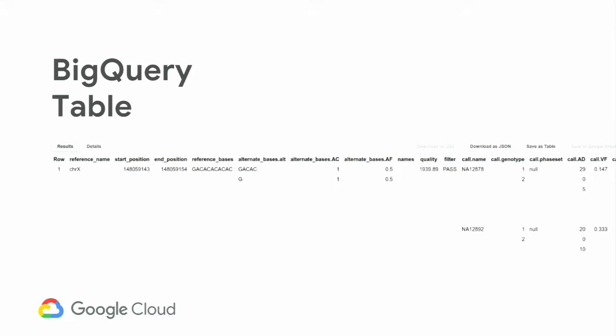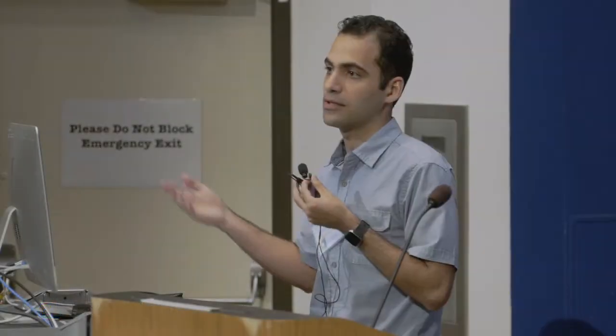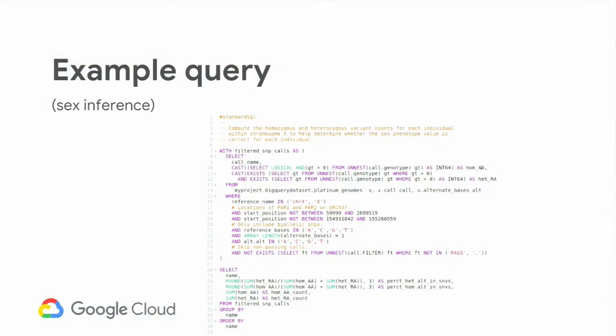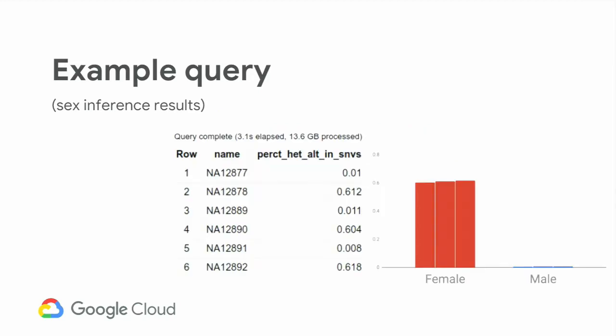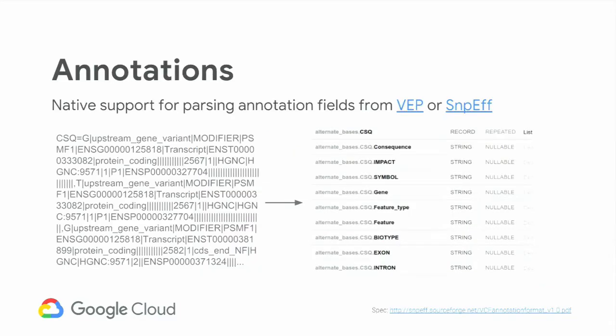And from here, because BigQuery supports standard SQL, you can do queries like, give me all the samples in chromosome exposition range, or all the samples with allele frequency less than one percent, et cetera. But I figured to give a showcase of the power you can do. This is an example query that infers the sex of individuals based on the heterozygosity rate of the X chromosome. And it runs in about three seconds and accurately predicts the sex in this case for the six samples.